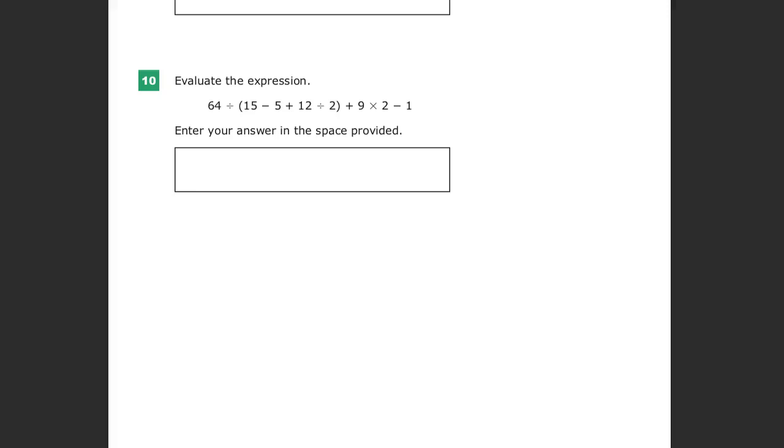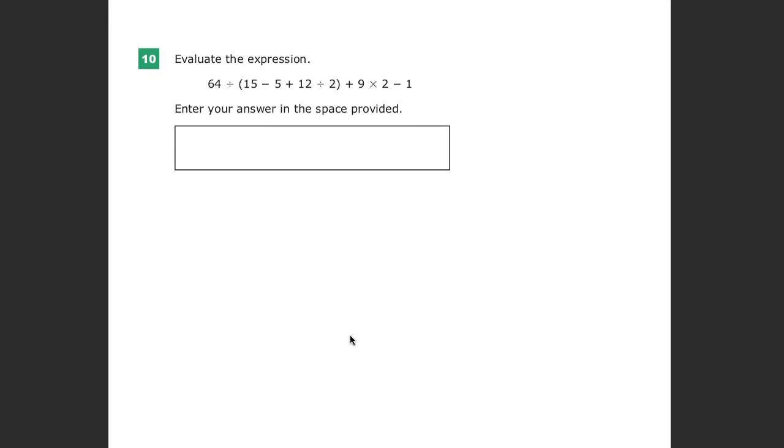Welcome. This is question number 10 on the TN Ready math practice test for grade 5. The question says 64 divided by the quantity 15 minus 5 plus 12 divided by 2 plus 9 times 2 minus 1.